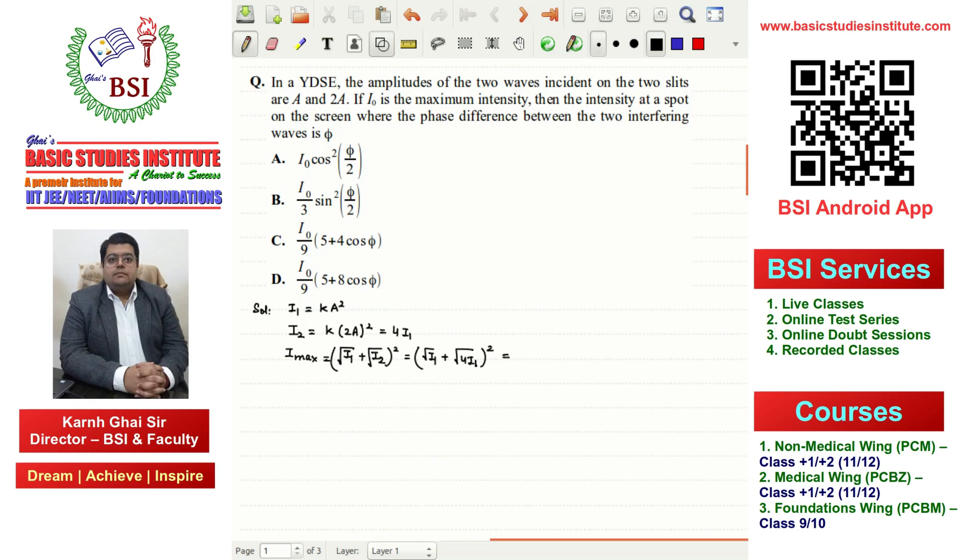Working through this, we get (√I1 + 2√I1)², which gives us (3√I1)² equals 9I1. For intensity at phase difference φ, we use I = I1 + I2 + 2√(I1·I2)cos(φ). Filling in values: I1 + 4I1 + 2√(I1·4I1)cos(φ).